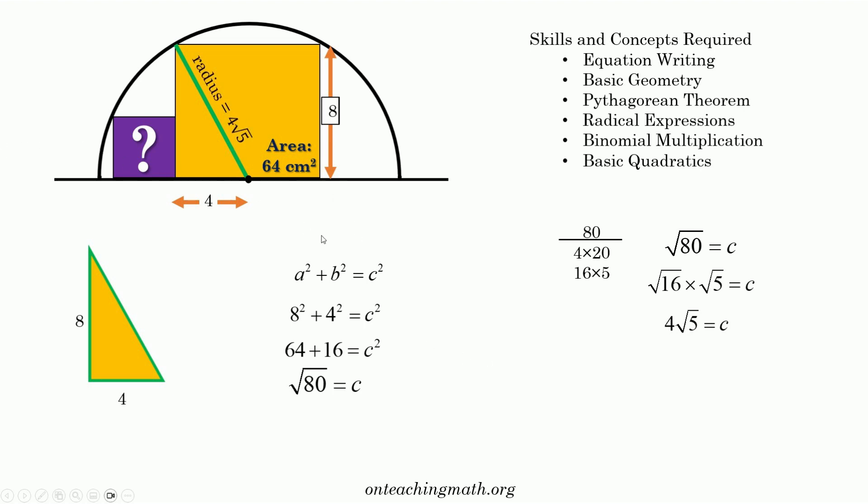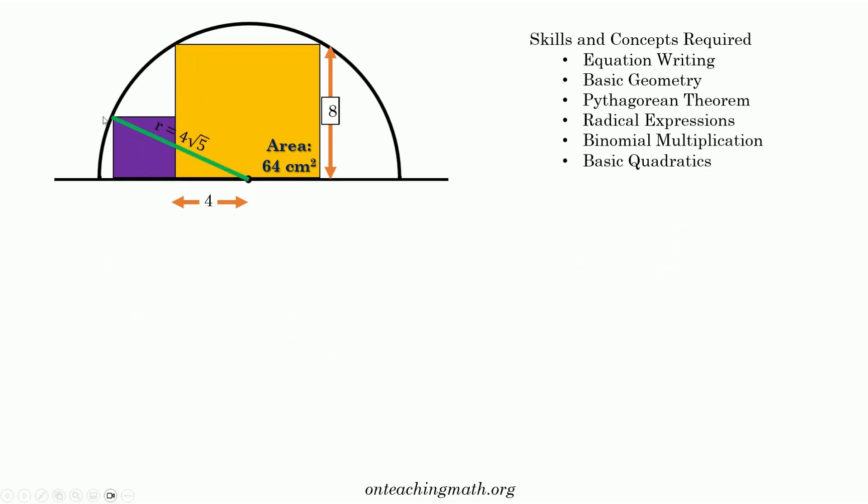So let's use that. Draw another triangle right here and let's see if we can figure out how to write an expression using the Pythagorean theorem to find this side at the bottom. Now that base, that longer side over there, well we don't know what this part is from here to here, so let's call that x. That's x. So this entire base would be x plus 4. Because it's a square, this height would also be x. So using the Pythagorean theorem we've got base and height x plus 4 and x. We've got the hypotenuse which is the radius which is 4 root 5. So let's go ahead and write all that out.